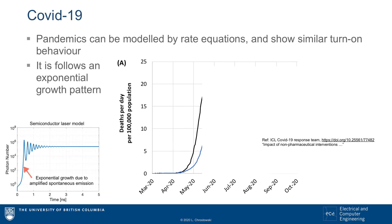Pandemics can be modeled by rate equations, and they show similar turn-on behavior. The number of infections follows an exponential growth pattern, just like the laser turn-on behavior.